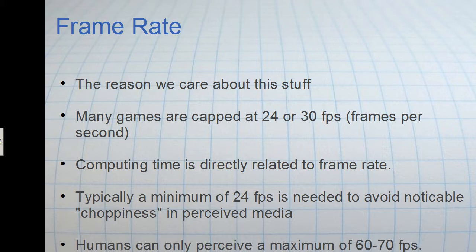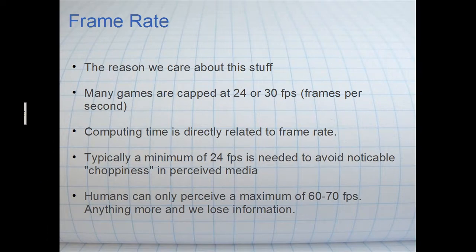So typically we want a minimum of about 24 frames per second on a middleware machine to avoid noticeable choppiness. And a fun little fact is that actually humans can only perceive about a maximum of 60-70 frames per second, anything more. And you can actually have sort of a point of diminishing returns where you get undesirable results. I don't know if you've ever seen maybe a helicopter when it's spinning its rotor so fast that it almost looks like it's spinning backwards.